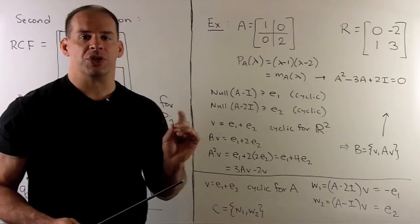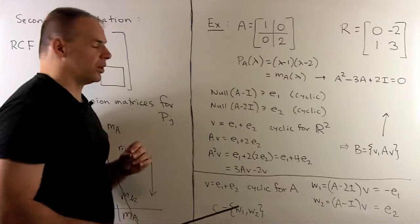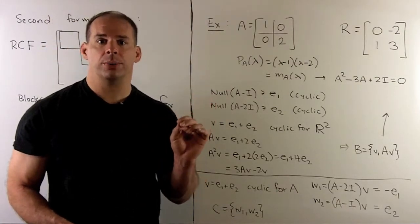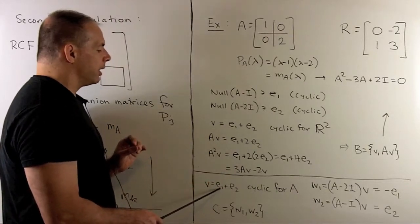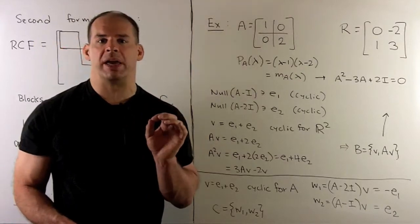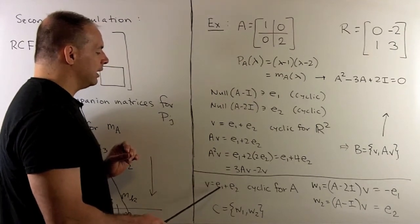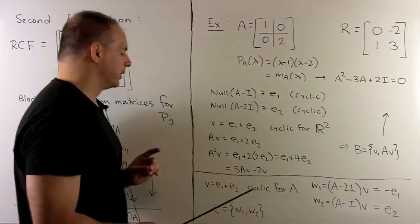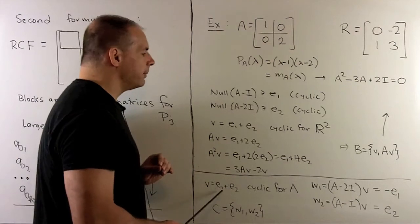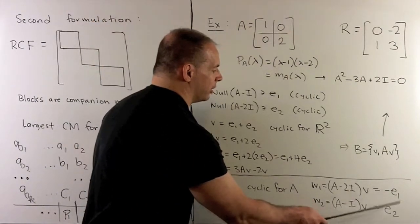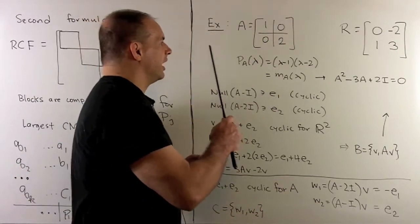To go in the other direction, we project according to irreducible factors. We have v = e_1 + e_2, though we could use any cyclic vector for ℝ². To recover e_1, we apply A−2I to v, which peels off the e_2 component since e_2 is in the null space of A−2I. This gives w_1 = −e_1. To get e_2, we apply A−I to v, giving w_2 = e_2. These are linearly independent, giving our basis {w_1, w_2}, which puts our matrix back in diagonal form.